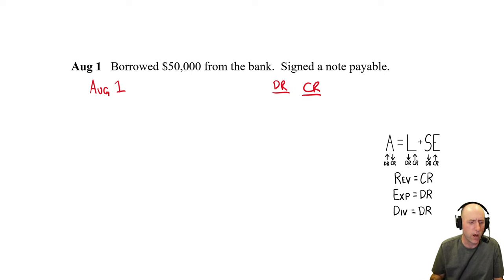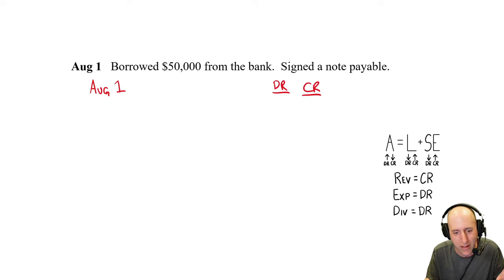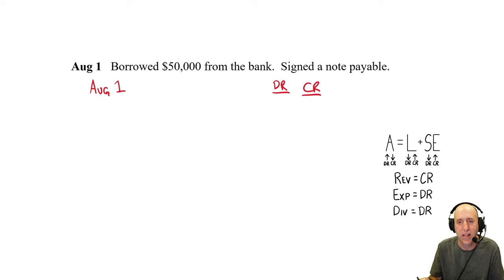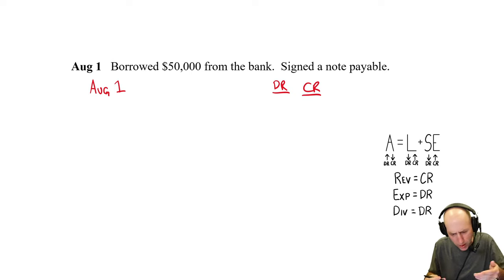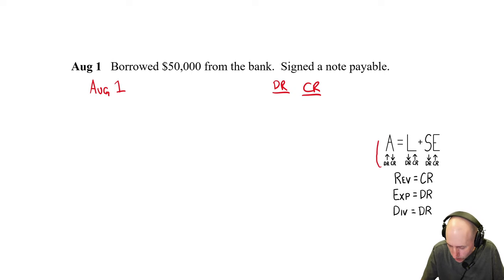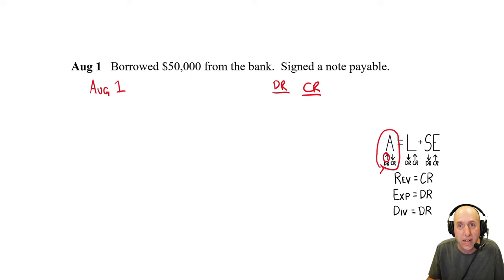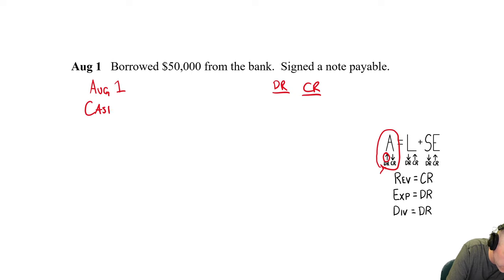August 1st: borrowed $50,000 from the bank, signed a note payable. The first thing I think about is: did cash change hands? If you borrow money from the bank, yes, you got cash. Cash is an asset and our cash asset is increasing, so we debit cash $50,000. The other part: we signed a note promising to pay them back. A note payable is a liability — if it has the word 'payable,' that's a dead giveaway. Our liability is going up, so we credit notes payable for $50,000.